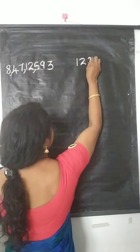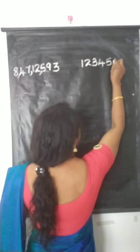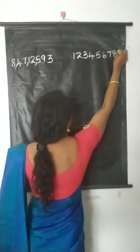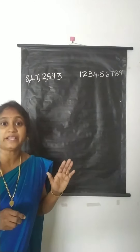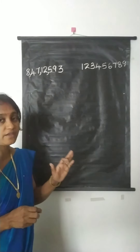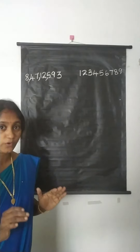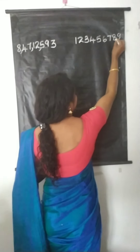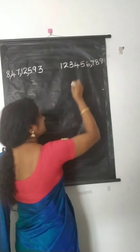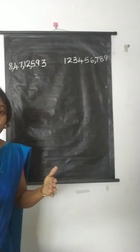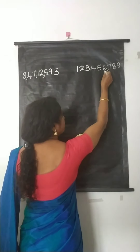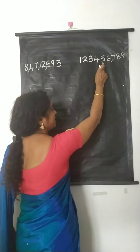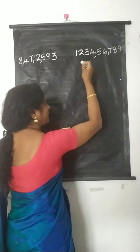Now we can do another example. The first comma comes after 3 digits from the right. Here, the third digit is 7. Therefore, the first comma comes in between 6 and 7. The next comma comes after 5 digits from the right — counting 1, 2, 3, 4, 5 — the fifth digit is 5. Therefore, the next comma comes in between 4 and 5.